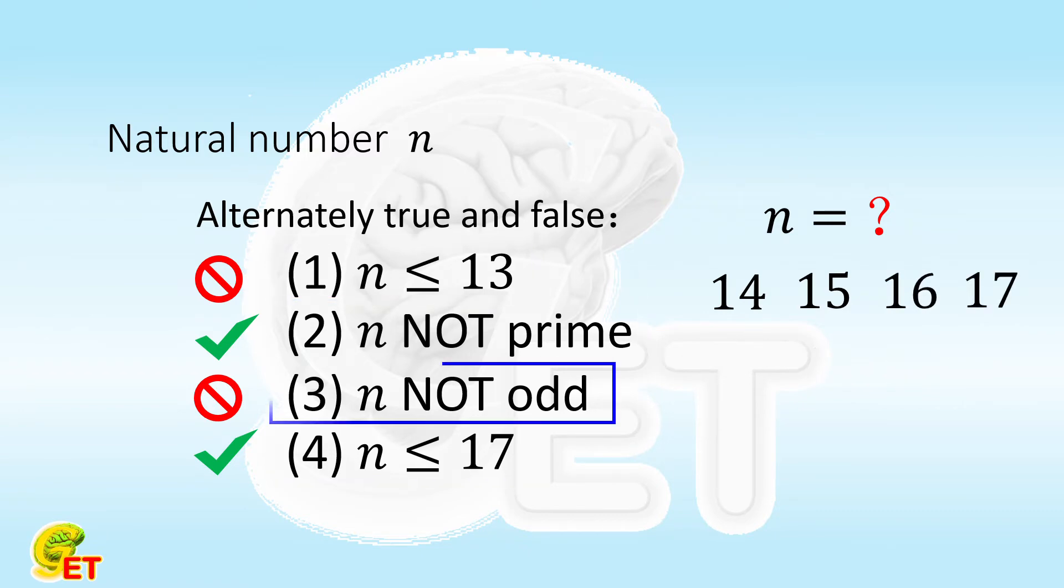Statement 3 is false. So we know that n is actually odd. So, we exclude the even numbers 14 and 16.